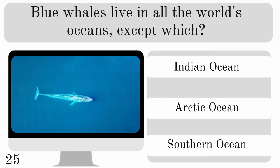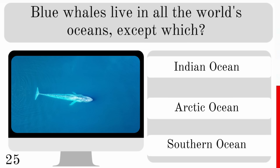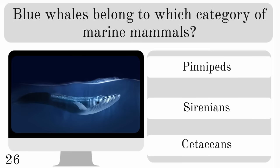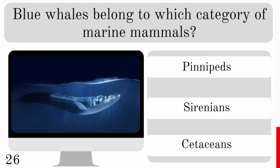Blue whales live in all the world's oceans except which — the Indian, Arctic or Southern Ocean? They don't live in the Arctic Ocean. So blue whales belong to which category of marine mammals — pinnipeds, Sirenians or cetaceans? They are cetaceans.